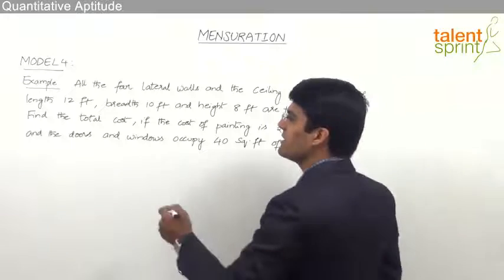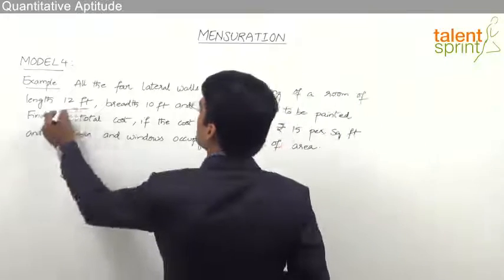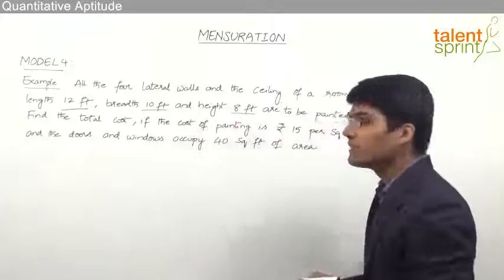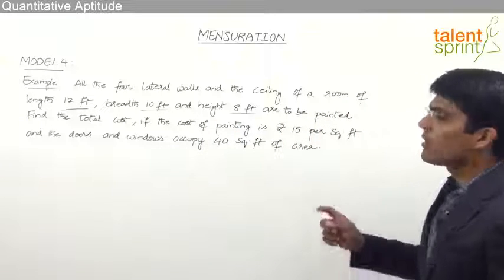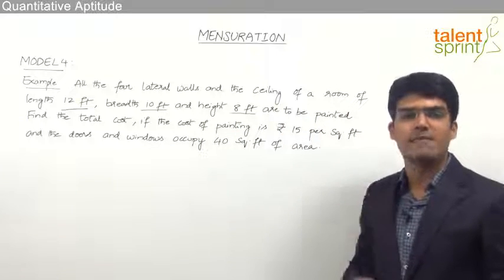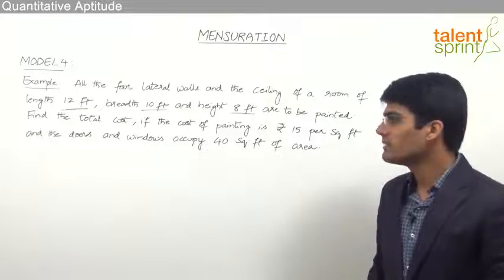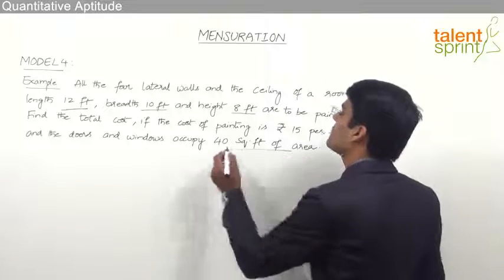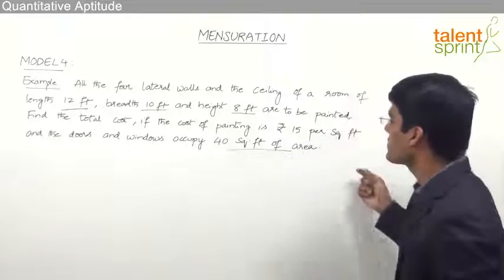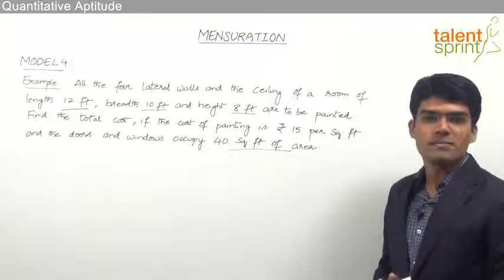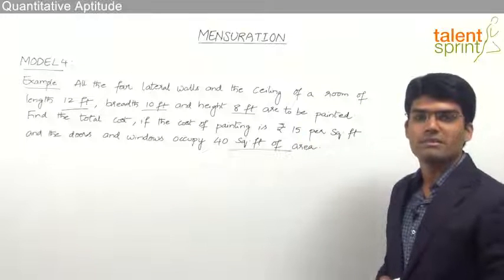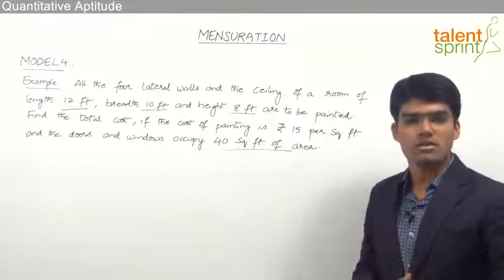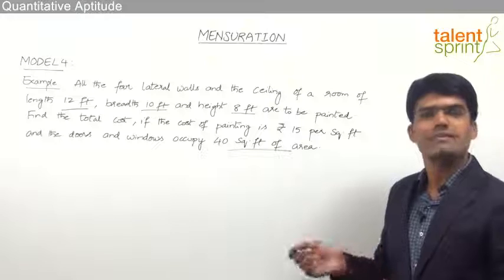As given in the question, there is a room of length 12 feet, breadth 10 feet and height 8 feet, where all the four surrounding walls and the ceiling have to be painted. The doors and windows occupy 40 square feet of area and the cost of painting is Rs 15 per square feet. From this information we need to find out the total cost of painting this room.